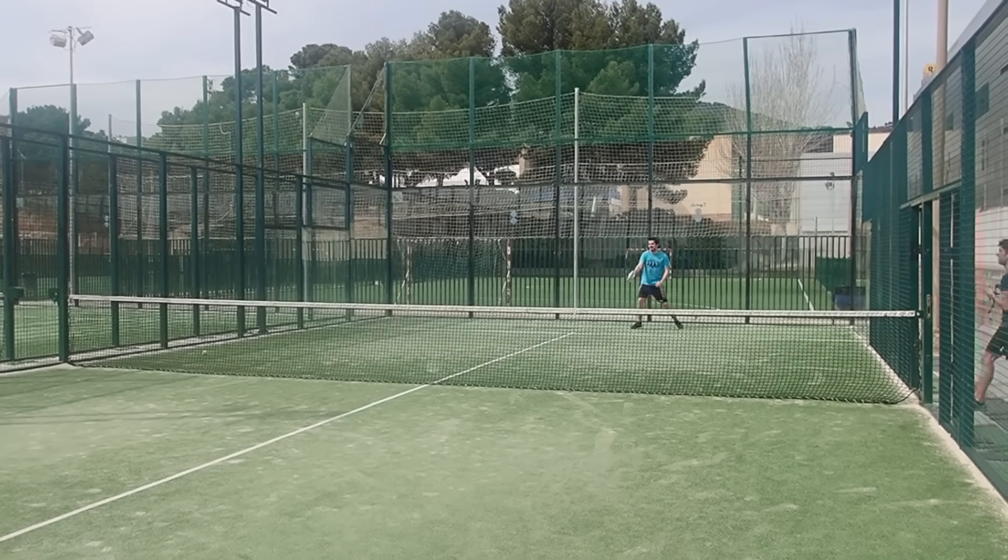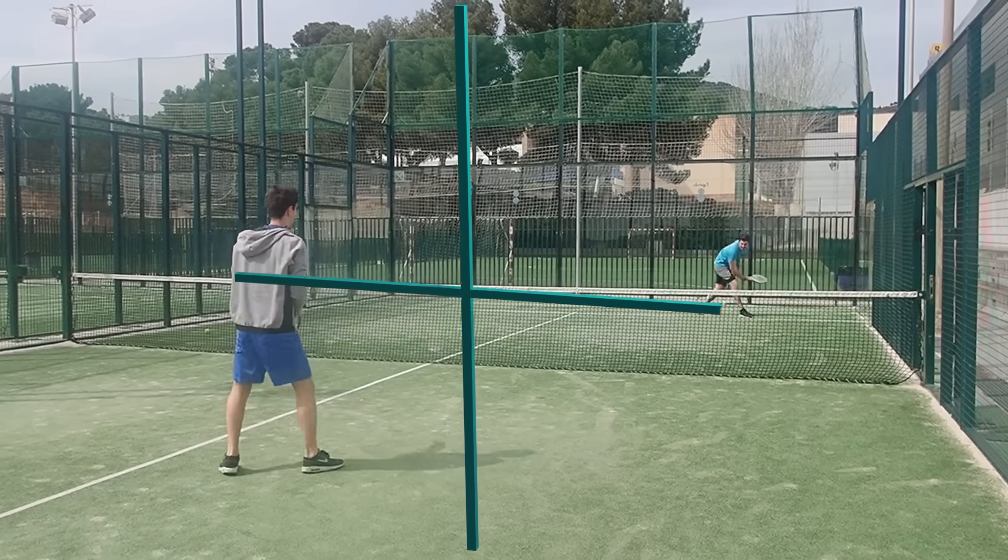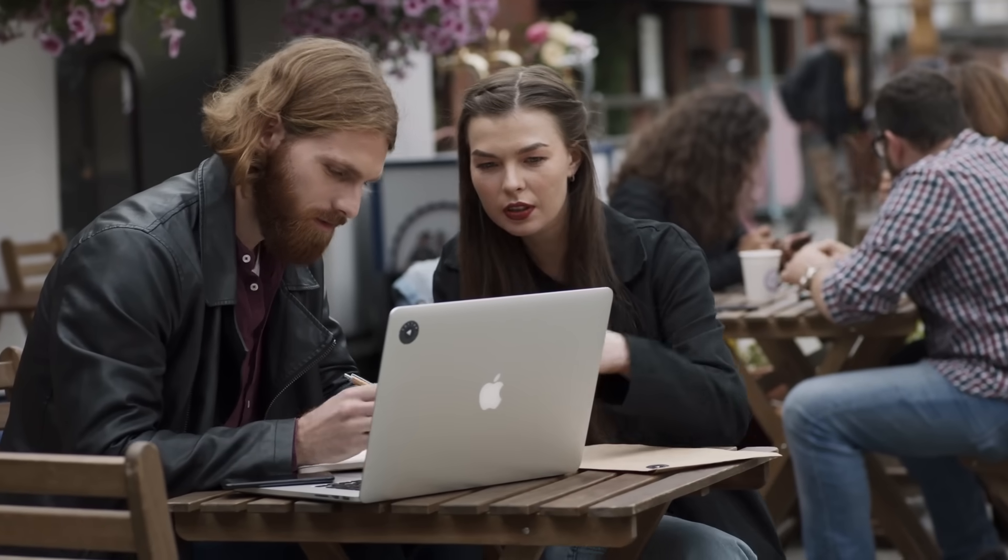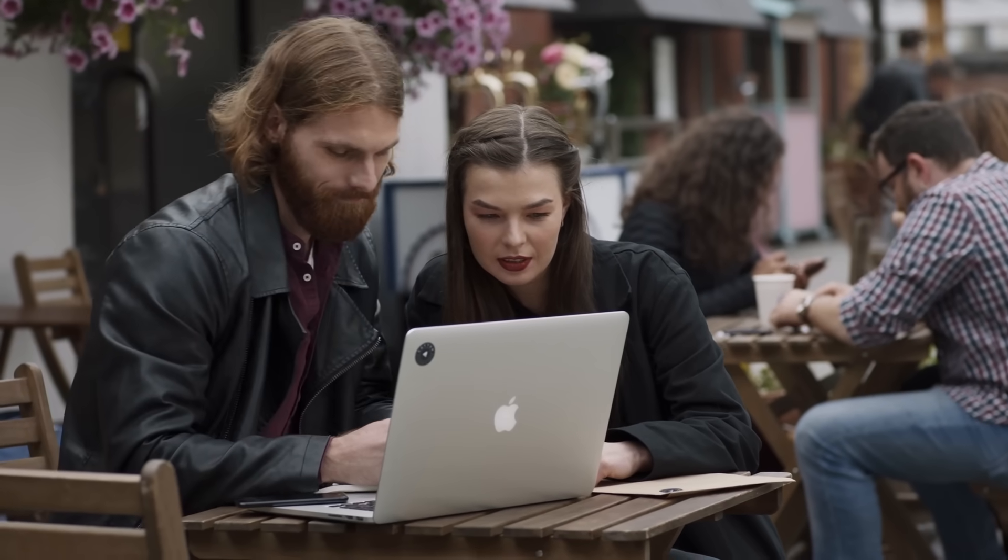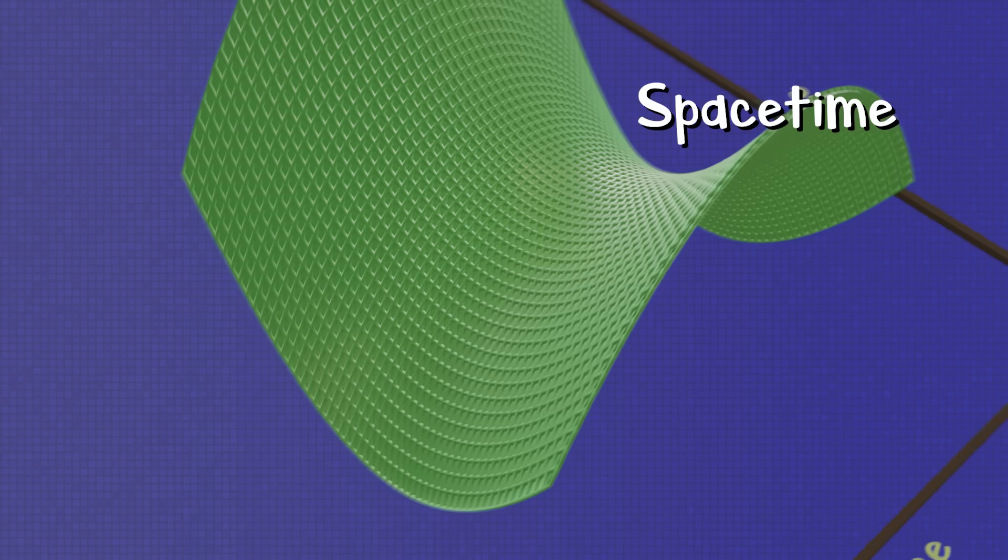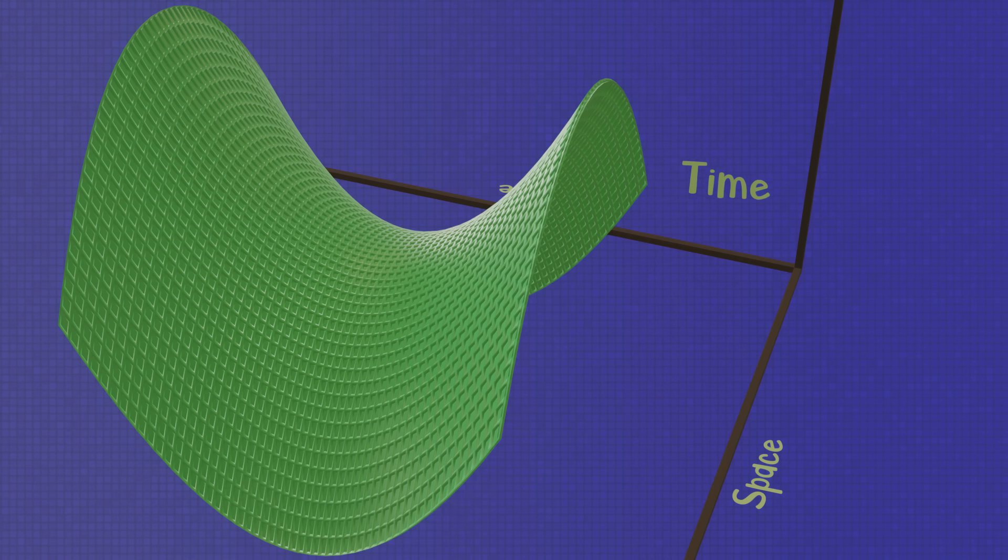All our lives we've been told we live in a three-dimensional space, or the third dimension. Those dimensions being height, width, and depth. Now, this is superficially correct and thinking any different won't change your life, but the reality is we exist within a four-dimensional realm called spacetime. We have freedom of movement within three of these dimensions, space, but the fourth, time, is restricted.